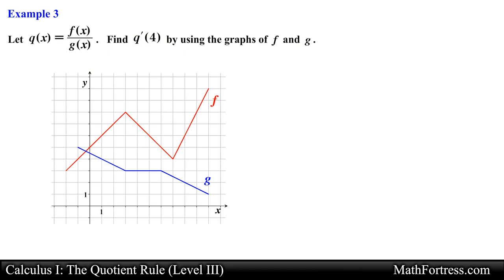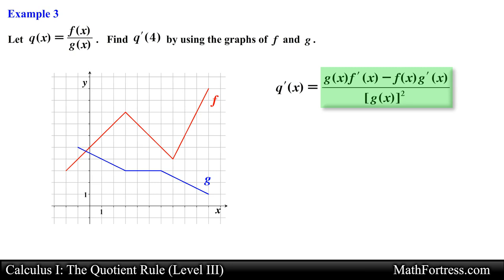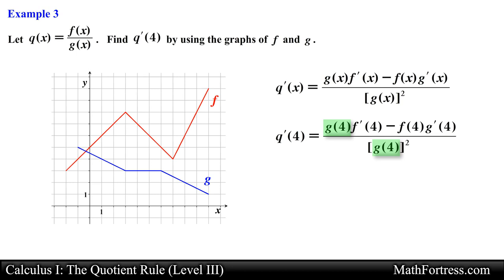Let's first find an expression for the derivative of q of x before we start analyzing the graphs. Notice that q of x is formed by the quotient of f of x and g of x, so we naturally need to apply the Quotient Rule. Applying the Quotient Rule we obtain the following expression for the derivative. Next we need to evaluate this derivative at x equals 4, which requires values for g of 4, f of 4, and their respective derivatives evaluated at x equals 4, which we will obtain from the graphs.